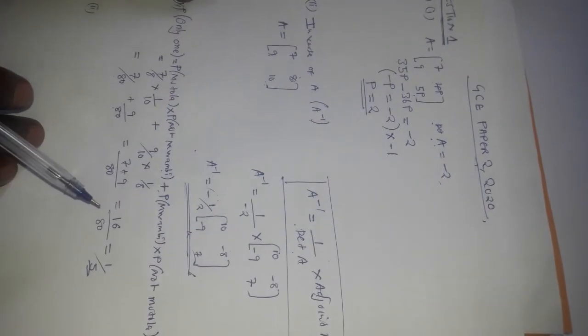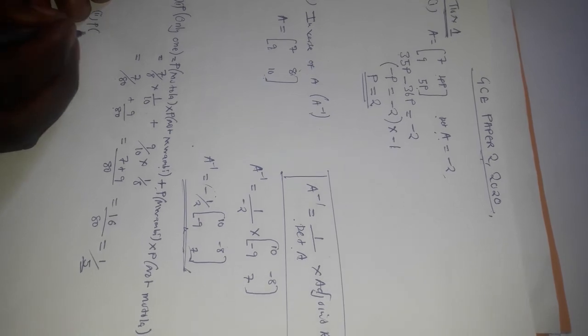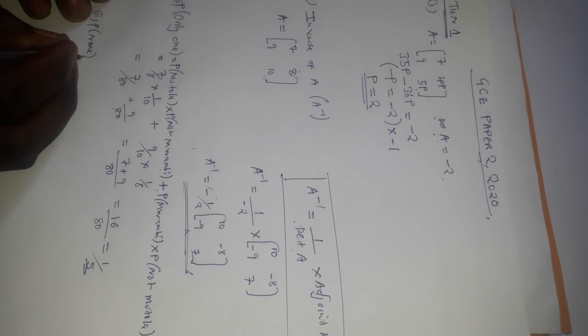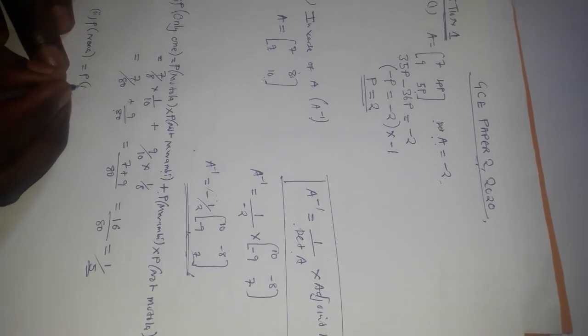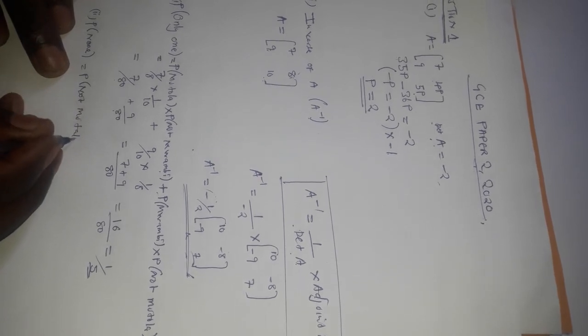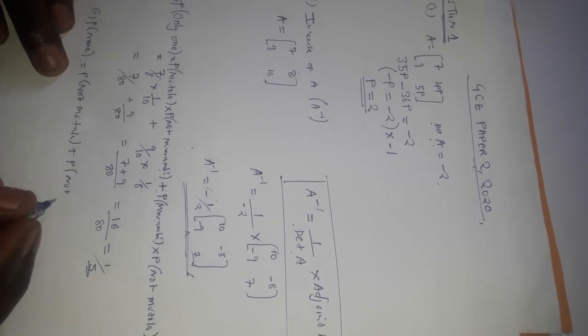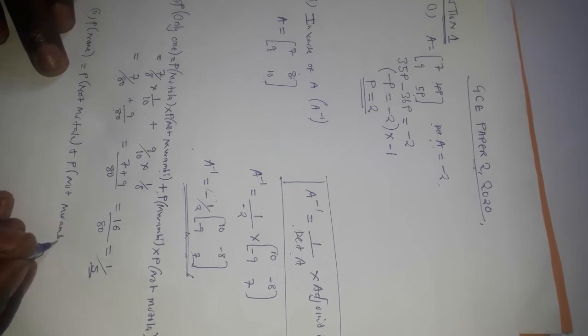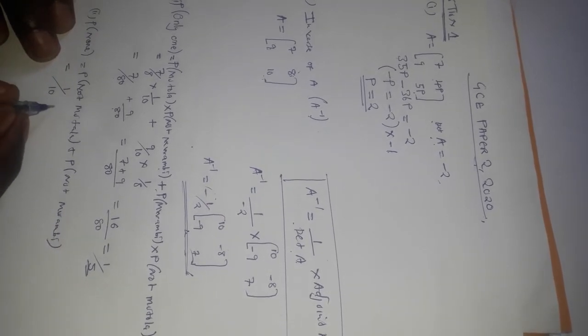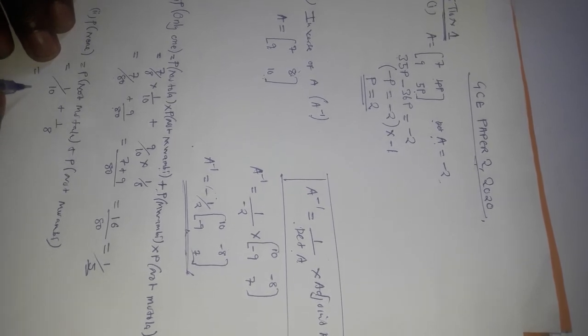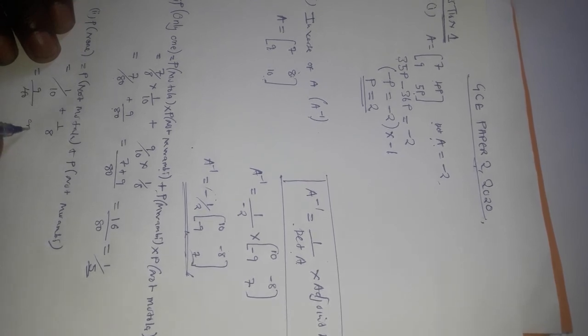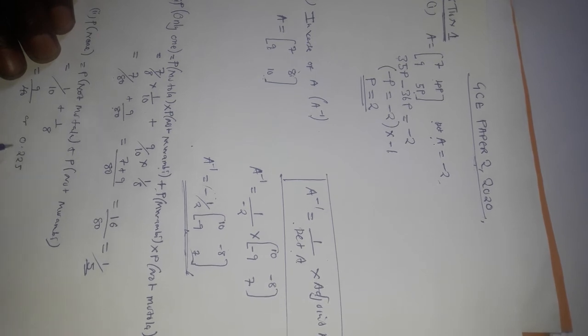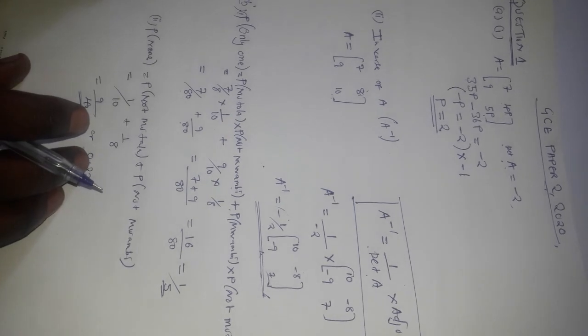For part B2 we find the probability that none of them is selected — neither Muttola nor Mwambi. The probability that neither is selected equals P(not Muttola) × P(not Mwambi), which is 1/8 × 1/10, giving us 1 over 80, which is also expressed as 0.225 as a decimal — you can confirm that with your calculator.